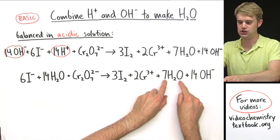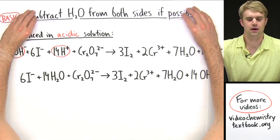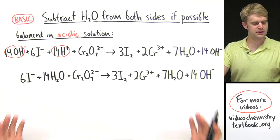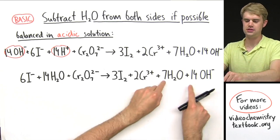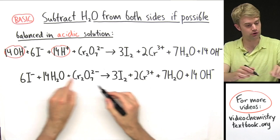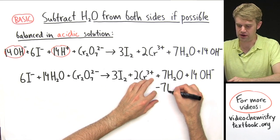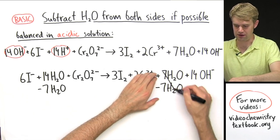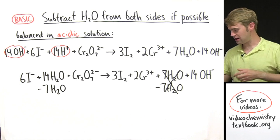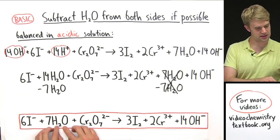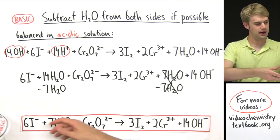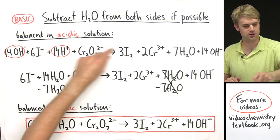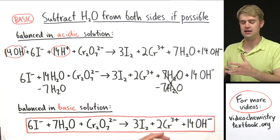Now I also have some H₂O on the other side, which is important for our next step: subtract H₂O from both sides if possible. Think of it like an algebra problem — we have H₂O on both sides so we can subtract it out. I have 7 H₂O here and 14 H₂O here, so I subtract 7 H₂O from each side. The 7 cancels out, and 14 minus 7 gives me 7 H₂O. The equation is now balanced in basic solution, with OH⁻ replacing the H⁺.